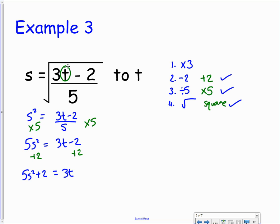And the last thing to do is to undo times by 3 by dividing by 3. So if we divide both sides by 3 here, then we're going to have a fraction on the left-hand side. So we have 5s squared plus 2 all over 3, and that equals t.